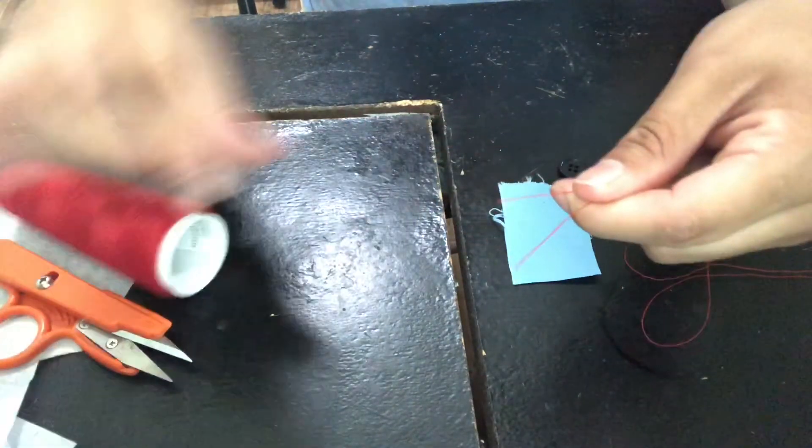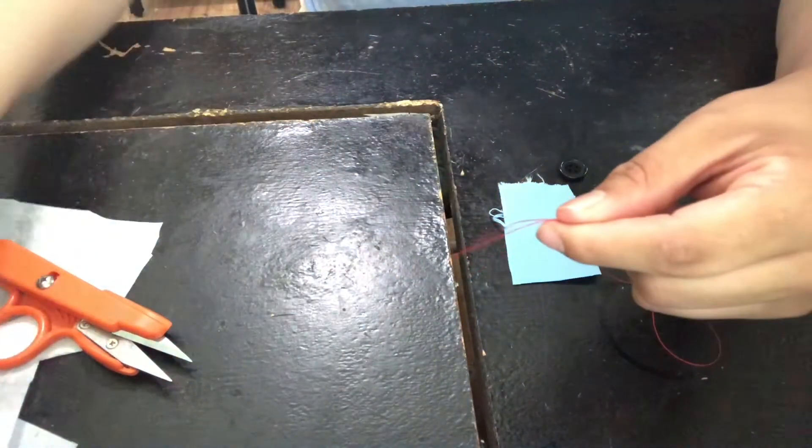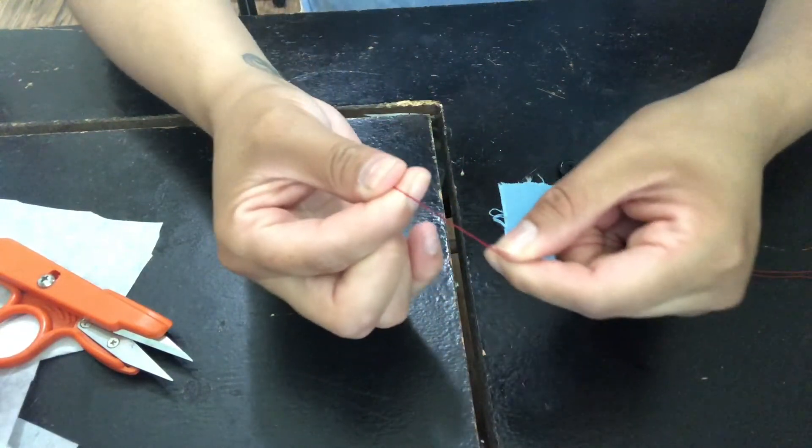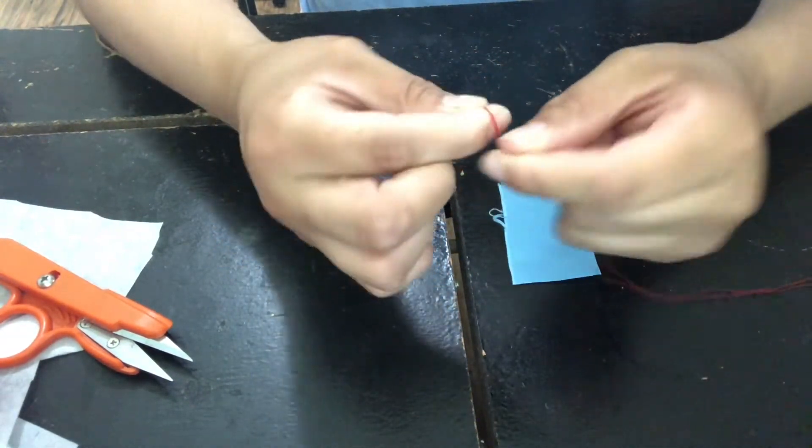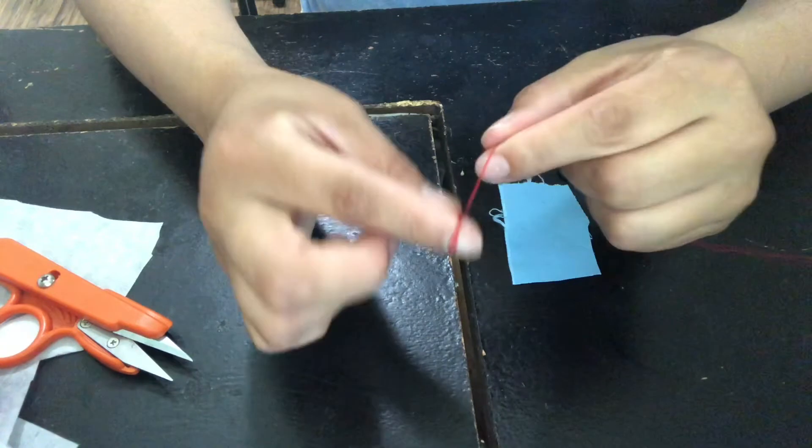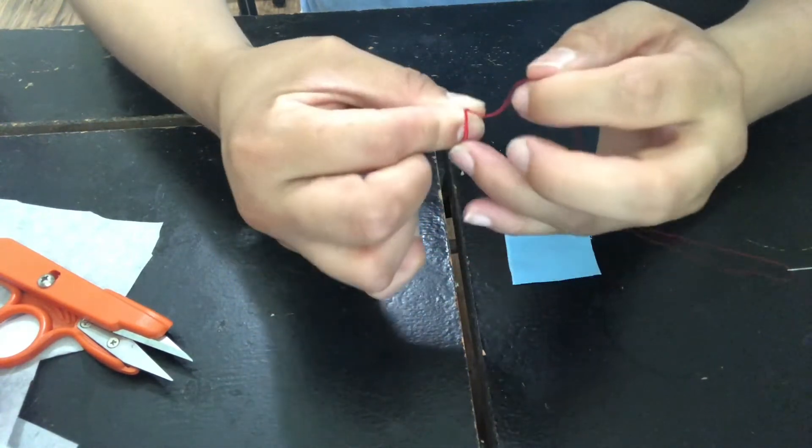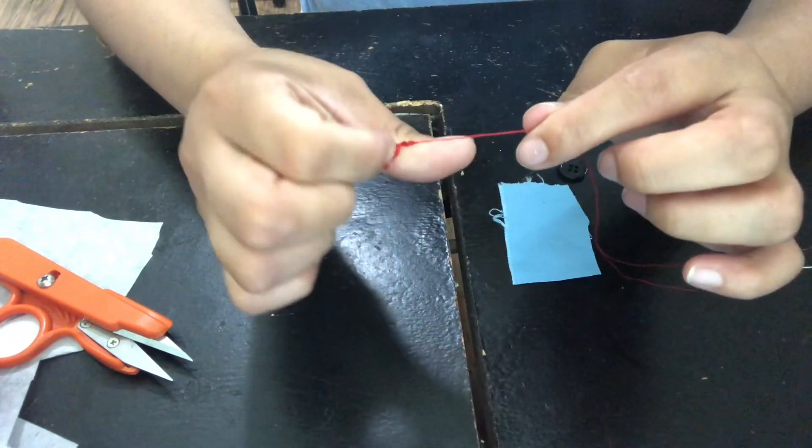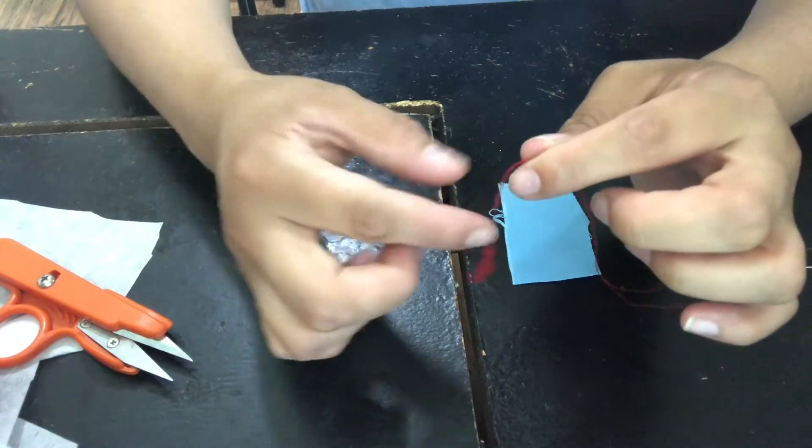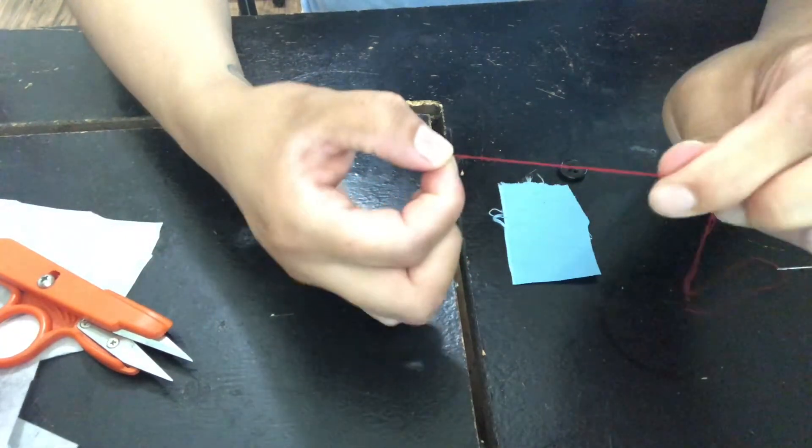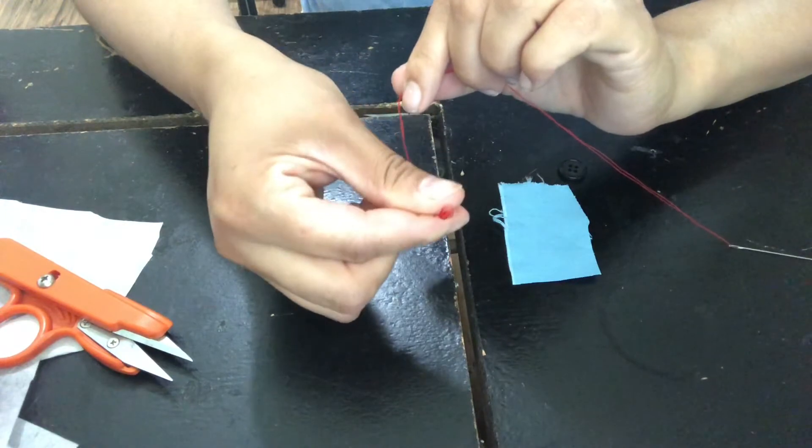Cut it, and then to lock in the end of the thread so it stays still, you want to wrap it around your finger about three times and then kind of shimmy it down like that and pull it through. Then you'll have an easy knot.